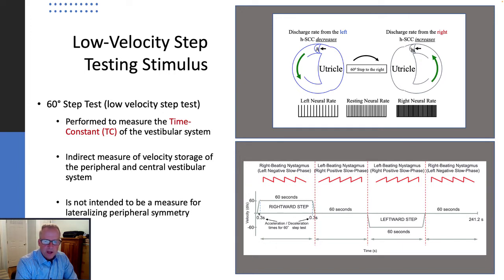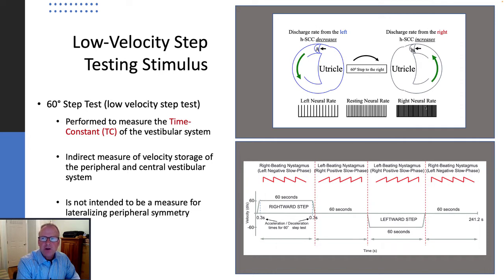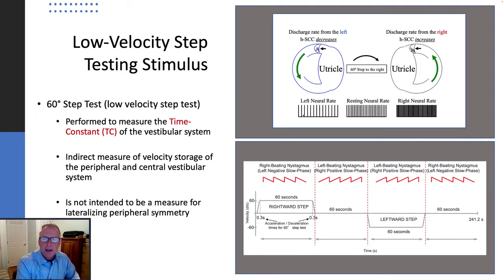It's during this acceleration period — which is about 0.3 seconds — that the chair abruptly accelerates to one direction, causing an increase in firing rate on one side (in this example to the right) and a decrease in neural firing rate on the trailing side.